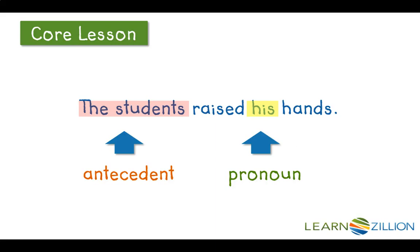Do our antecedent and pronoun agree in number? 'Students' is plural and 'his' is singular, so we have to change our pronoun from singular to plural. We need to correct it: 'The students raised their hands.'